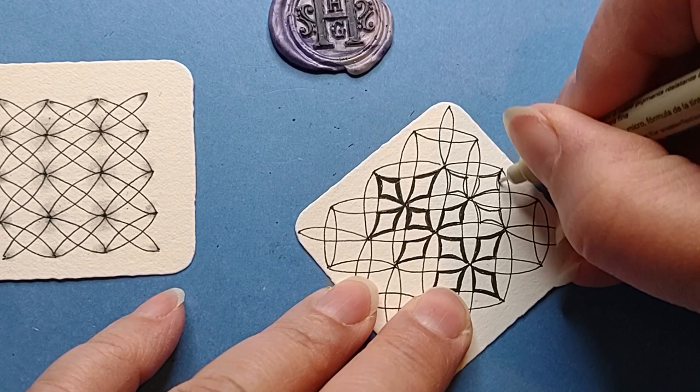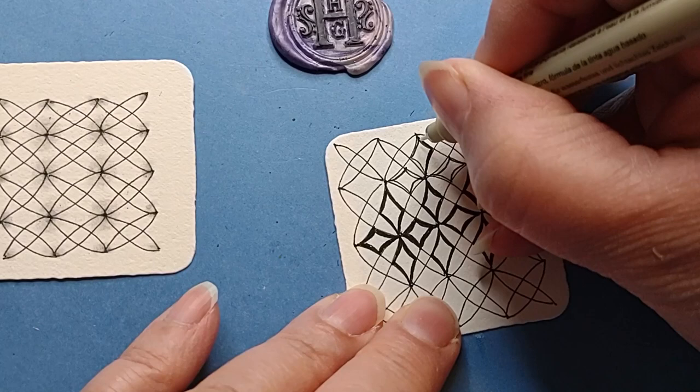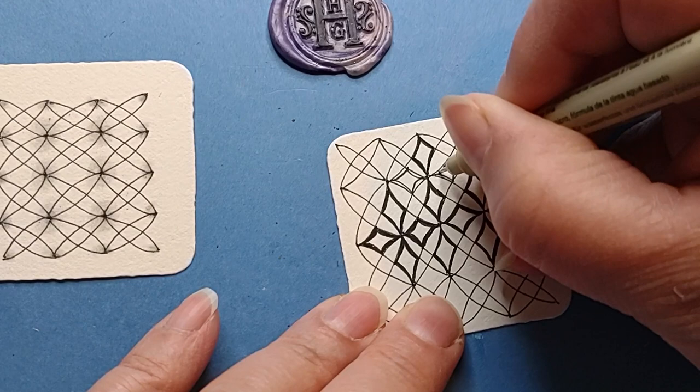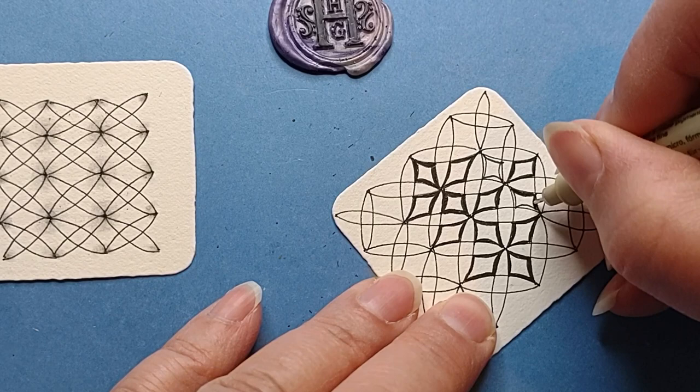Now, honestly, you could take a thicker marker or pen and just do that, instead of, you know, you don't have to do this, where I'm kind of making a curved line on the inside.